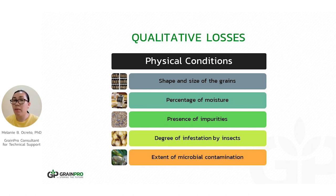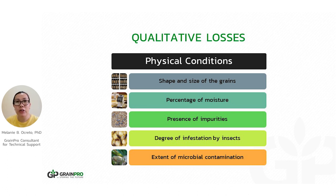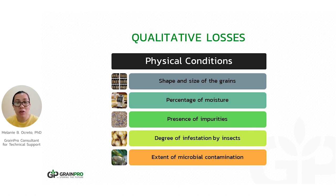If the commodity is infested or contaminated with molds, fungi, or bacteria, it will not pass the standard for human consumption and gets rejected. The quality is not good, so it is being rejected or you cannot demand a good price for your commodity.